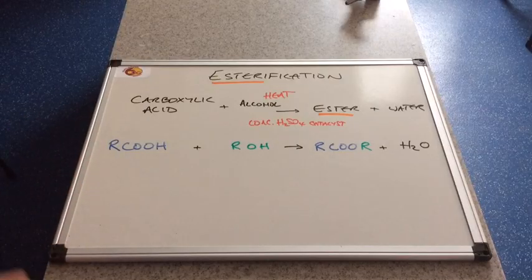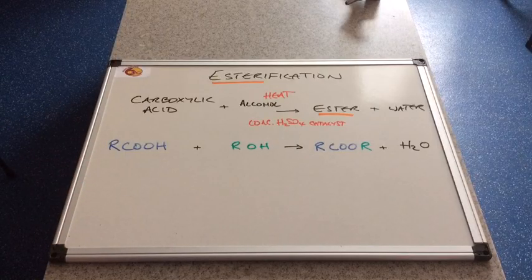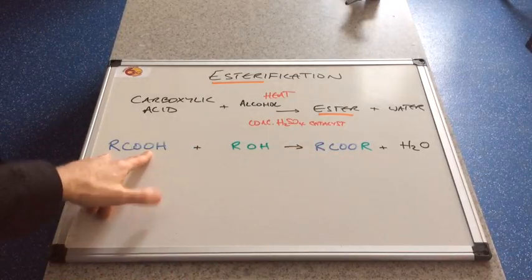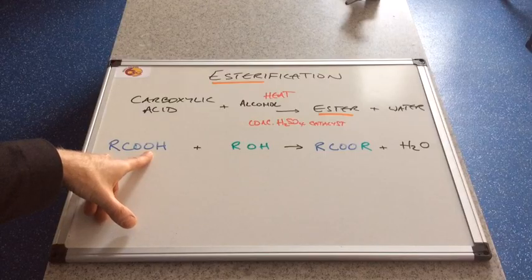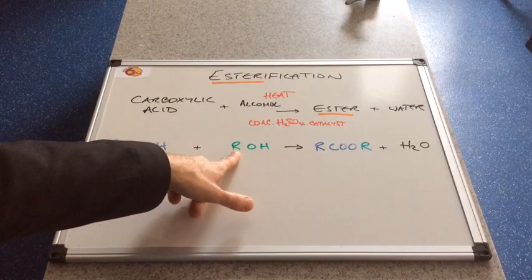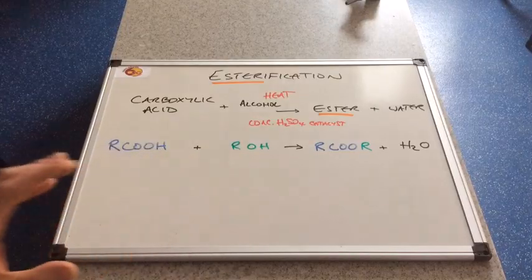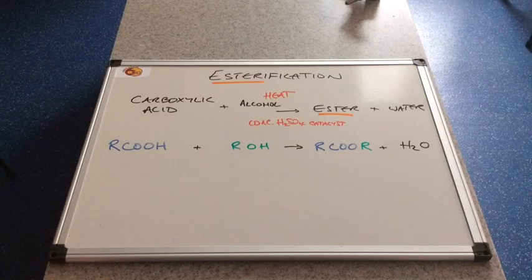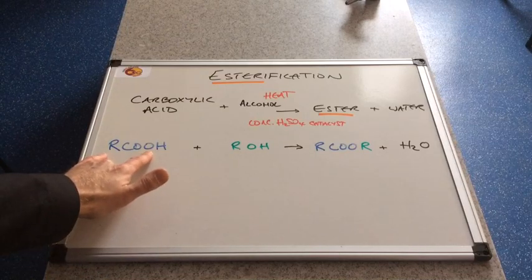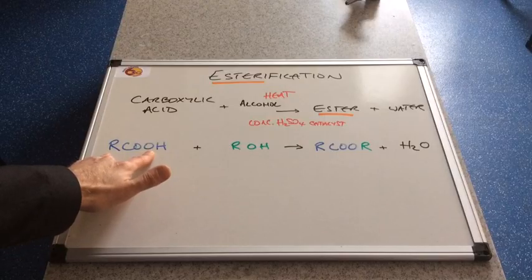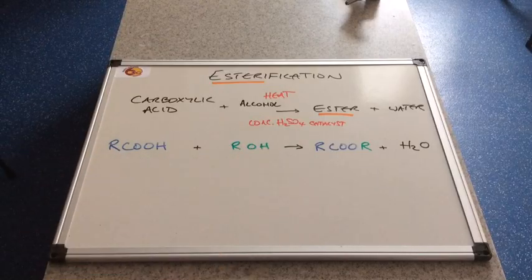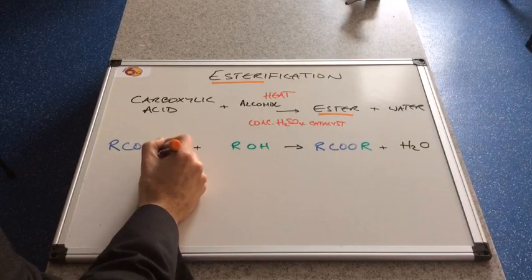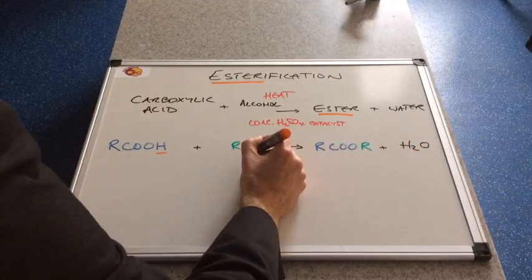And you'll see, I'll give you some examples later on so you can see what we mean by that. But essentially, the ester is formed from this part of the carboxylic acid and this part of the alcohol. So I'm going to make the water from this hydrogen here and this OH here.